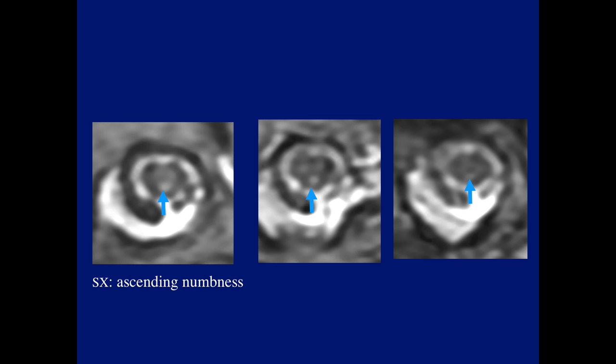What's another condition not yet mentioned? Both Asif and Stefan came up with the correct diagnosis. This is a finding usually seen in syphilitic myelopathy — tabes dorsalis. Patients affected with that have severe problems with their posterior columns.